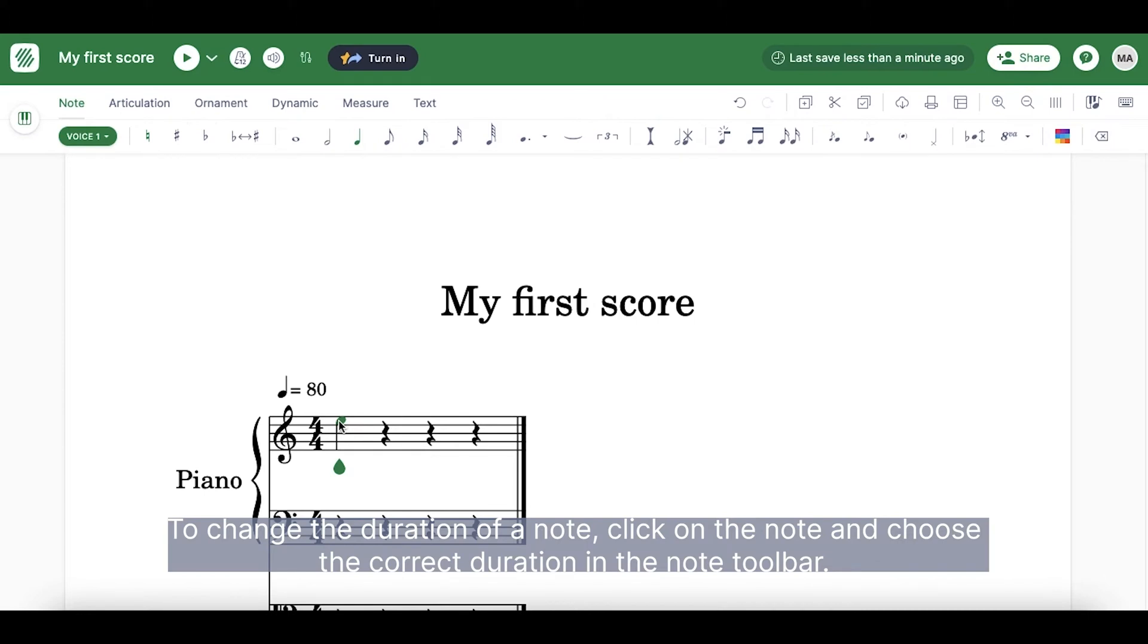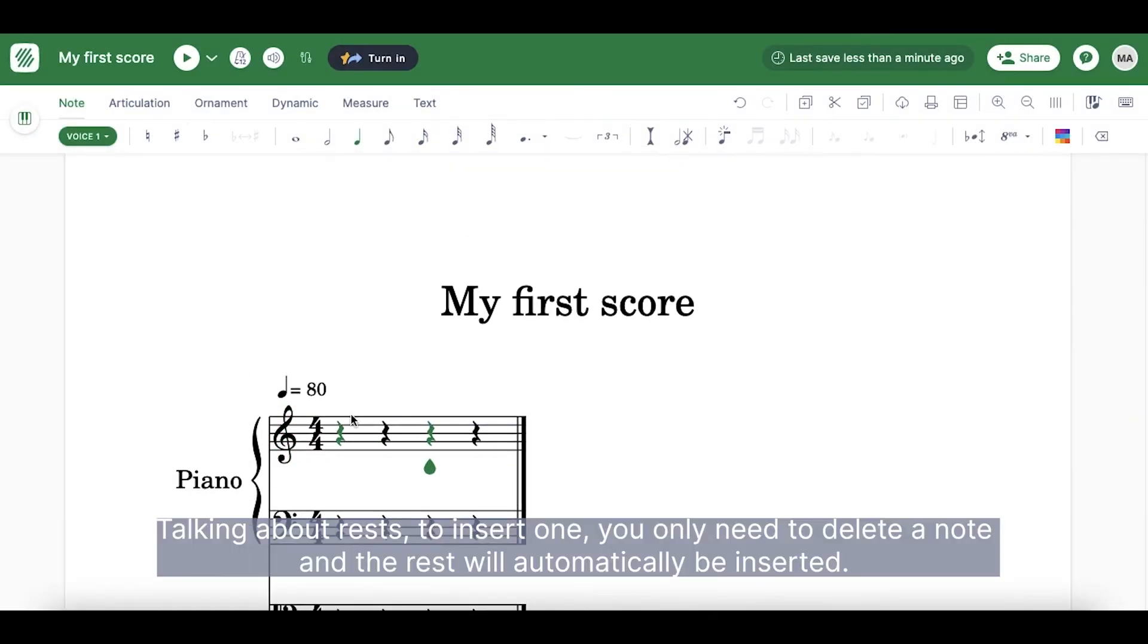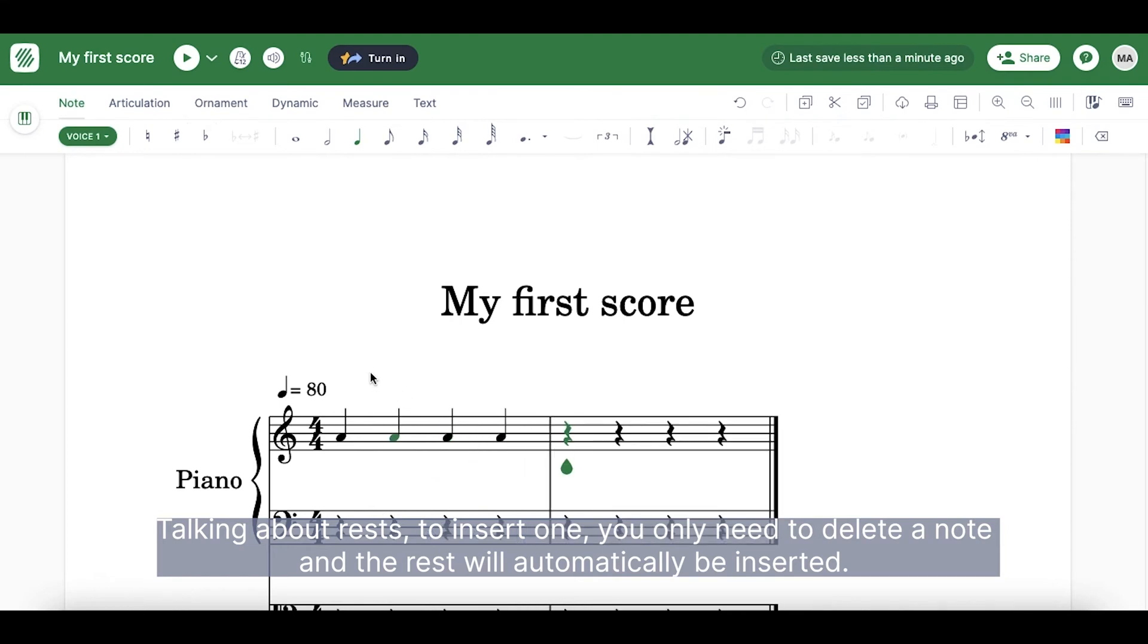To change the duration of a note, click on the note and choose the correct duration in the note toolbar. For rests, this works the same way. Talking about rests, to insert one, you only need to delete a note and the rest will automatically be inserted.